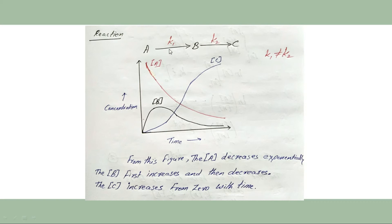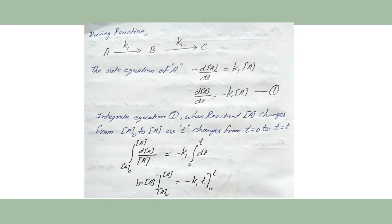K1 and K2 are the rate constants of the successive reactions, where K1 ≠ K2. If we plot a graph of concentration versus time, we observe that the molar concentration of reactant A decreases exponentially, the intermediate product B initially increases and later slowly decreases, while the final product C increases from 0 to a maximum at the end of the reaction.